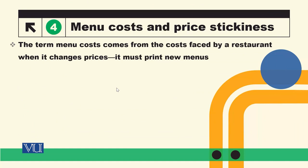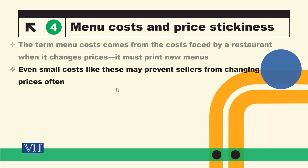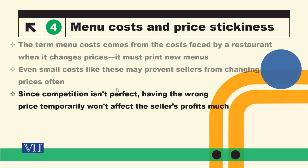Another concept explaining price stickiness is menu cost. Menu cost comes from the cost faced by a restaurant when it changes its price — it needs to reprint its menu. This appears to be a small cost, but the Keynesian model says even small costs like these may prevent sellers from changing prices often.